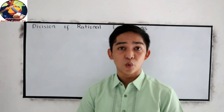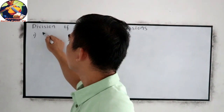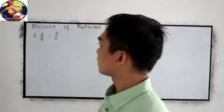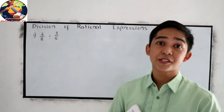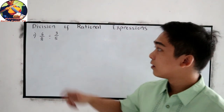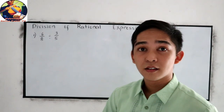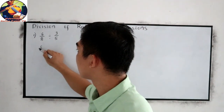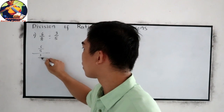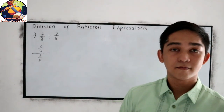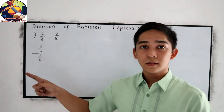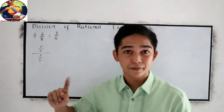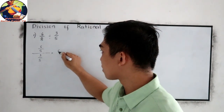Let's have our example number one. If you have 6 over 8 divided by 3 over 5. So this can be written as 6 over 8 divided by 3 over 5. To solve this kind of fraction, our first step is copy our numerator. In this case, our numerator is 6 over 8.